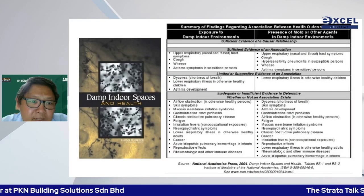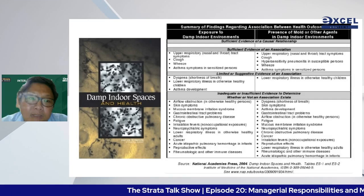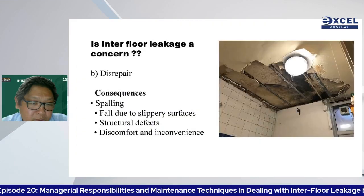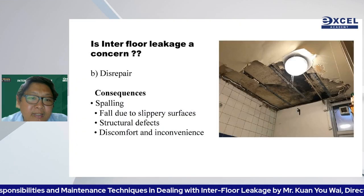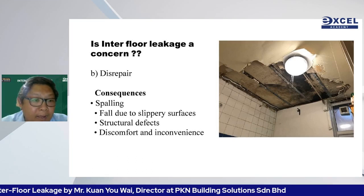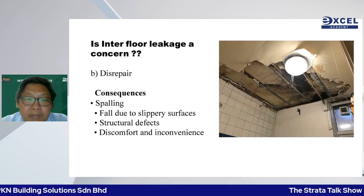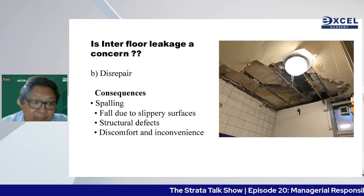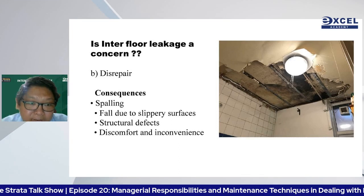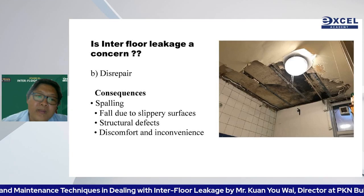Beyond mold, excessive dampness causes significant damage to building materials. Timber, cement, and concrete expand when wet. Metals such as steel start to rust and expand, losing structural integrity. This deterioration is well-documented scientifically.